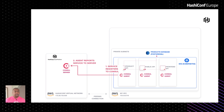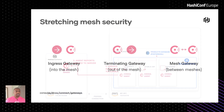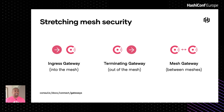We have a second area to address to effectively control machine-to-machine access: we need to stretch our mesh security. We still have components like the database which are not part of our service mesh. We can bring those into the mesh using something called a terminating gateway, which allows infrastructure components outside the mesh to be controlled within mesh controls. We can also use an ingress gateway to allow traffic from outside the mesh to reach services inside it, and mesh gateways to connect different meshes together in distributed architectures.